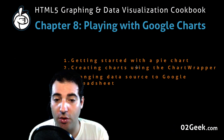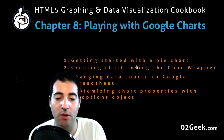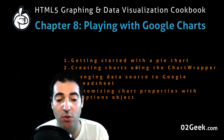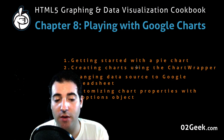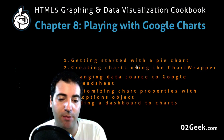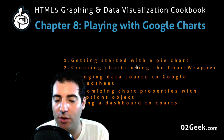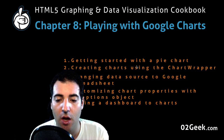Our next step is customizing the chart properties with the options object. We're going to explore the options object so you understand it and know how to customize any chart in Google Charts. The API is very simple to follow. Once you finish this chapter and we add a dashboard to our charts, we'll have more or less covered the core functionalities of Google Charts.